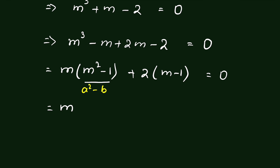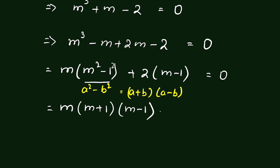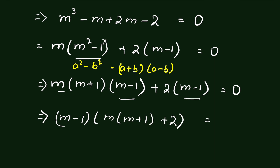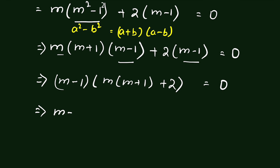Now m squared minus 1 is in the form of a squared minus b squared. If we write 1 as 1 squared, this equals a plus b times a minus b. So this we can write as m times m plus 1 times m minus 1, plus 2 times m minus 1 is equal to 0. Now m minus 1 is a common factor, so taking it out: m minus 1, times m times m plus 1 plus 2, is equal to 0 — that is, m minus 1 times m squared plus m plus 2 is equal to 0.